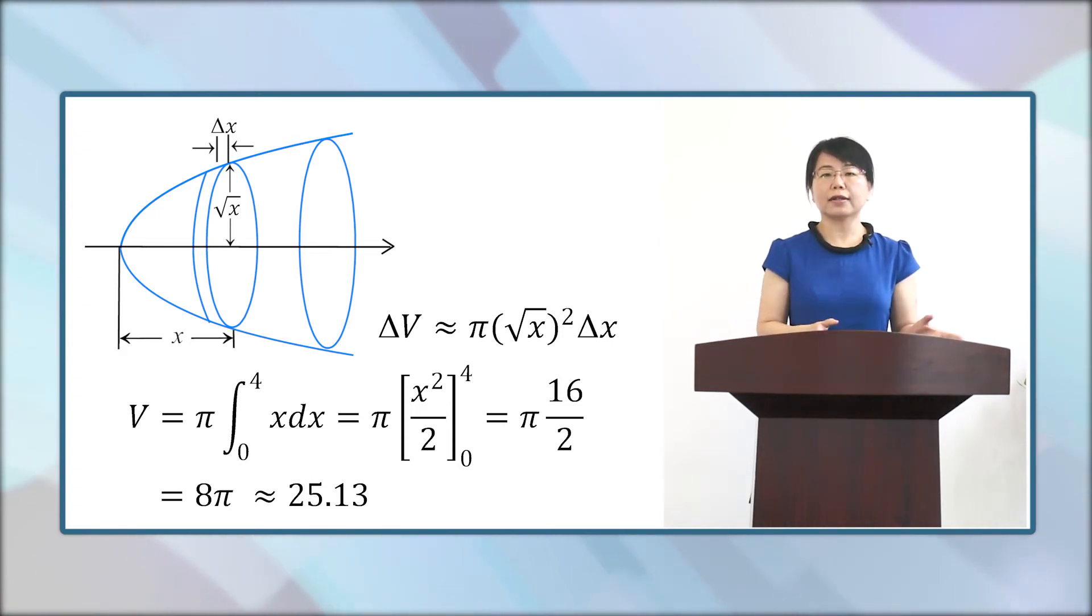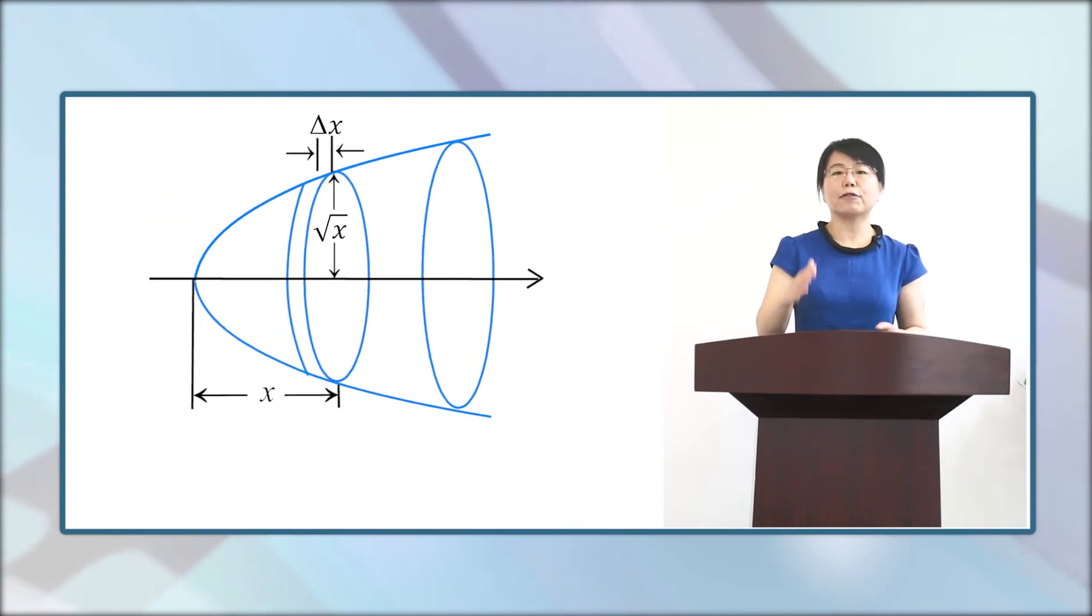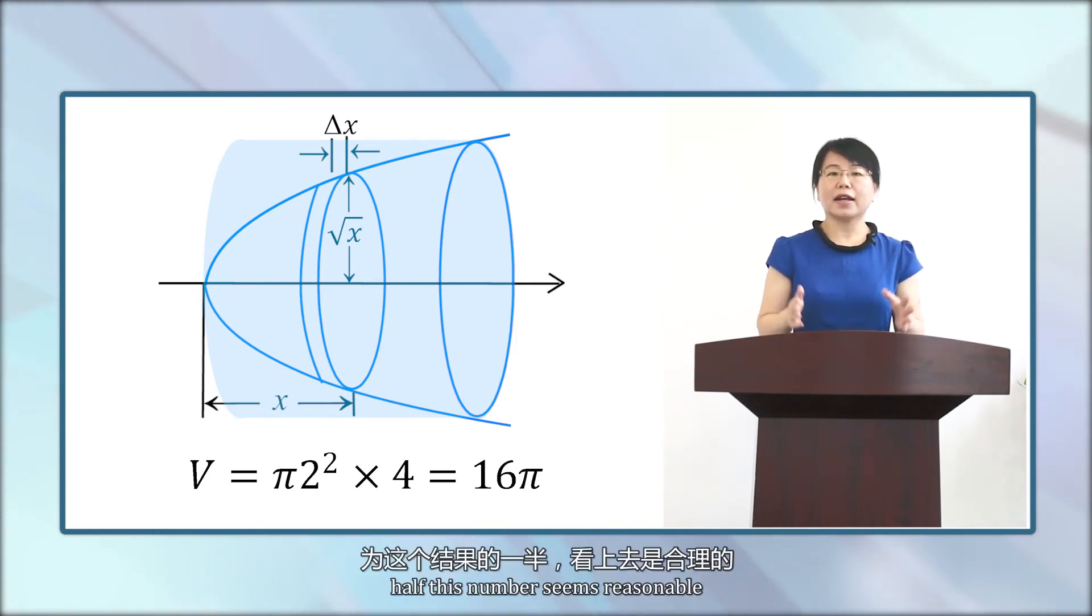Before we move on, let's think about one question. Is this answer reasonable? Yes. The right circular cylinder that contains the solid has a volume of V equals π times 2² times 4, and it's 16π. And half this number seems reasonable.